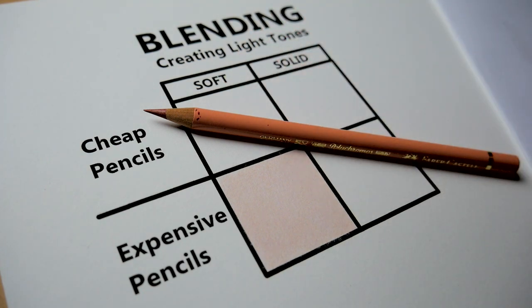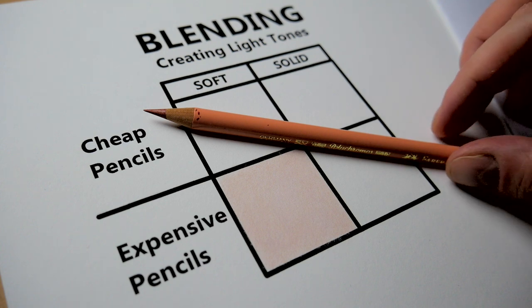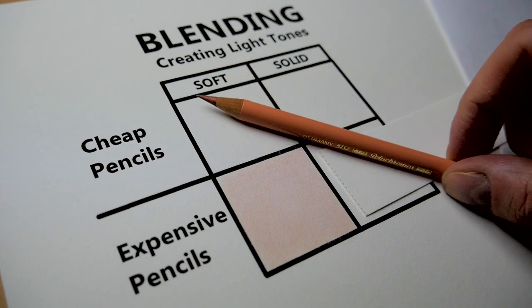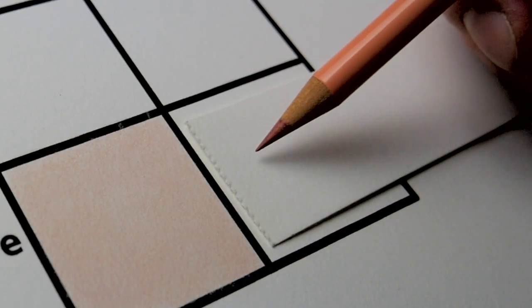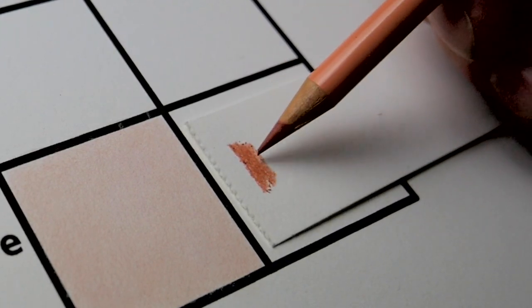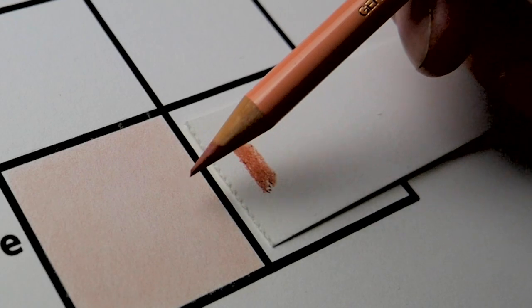This is one way of manipulating the saturation and the value of a color pencil. That is essentially a different color from the original. Here's an example of how the pencil actually looks if I applied pressure. You can clearly see that difference there.